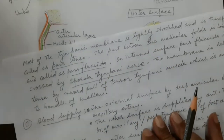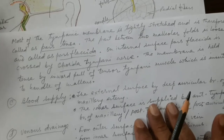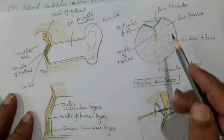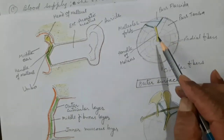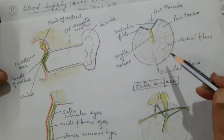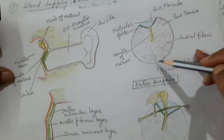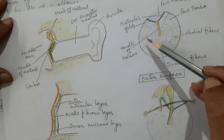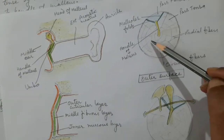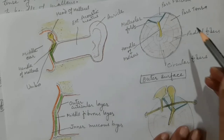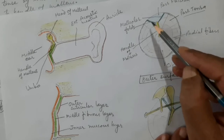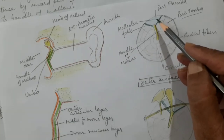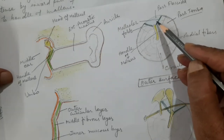Most of the tympanic membrane is tightly stretched and is therefore called the pars tensa. Looking at the tympanic membrane from the outer surface, this large tightly stretched part is the pars tensa. There is a small triangular part which is not tense — it is loose and thin — and this is called the pars flaccida.